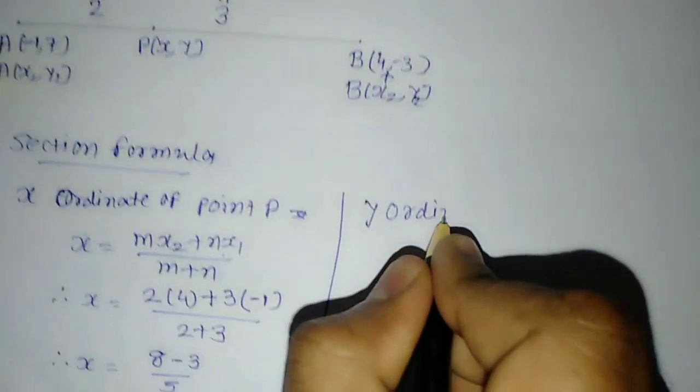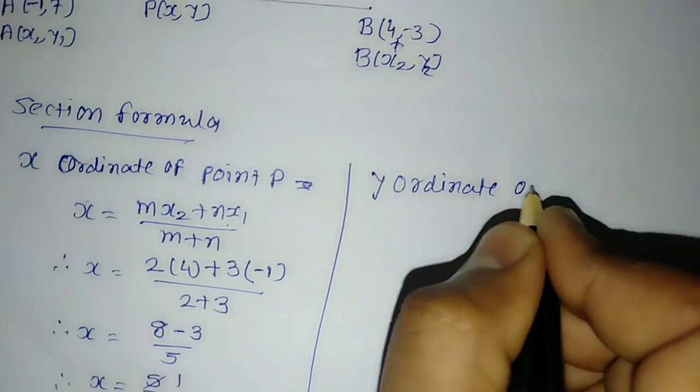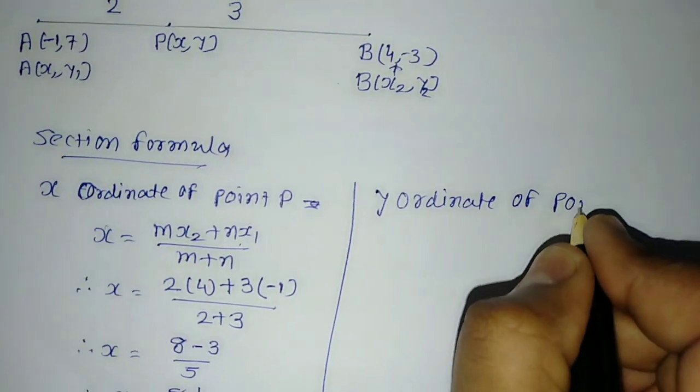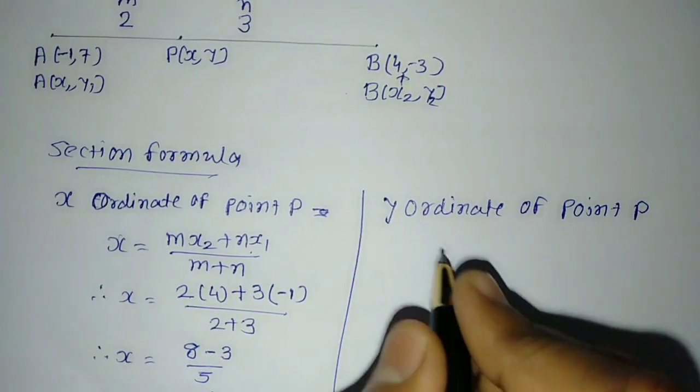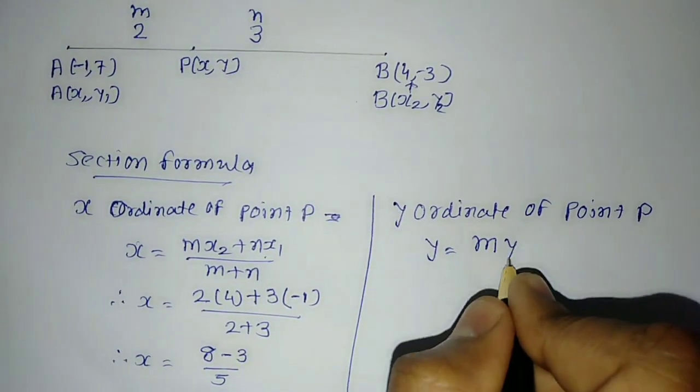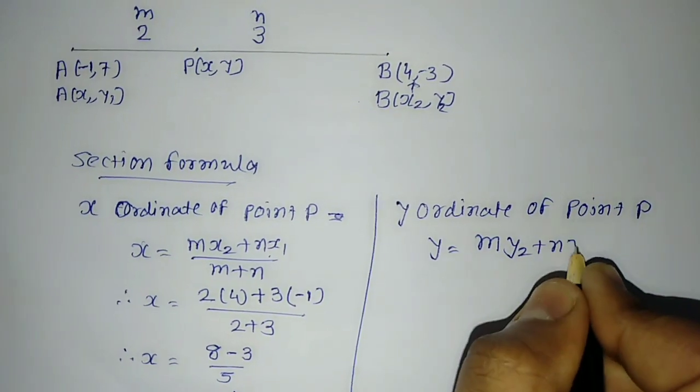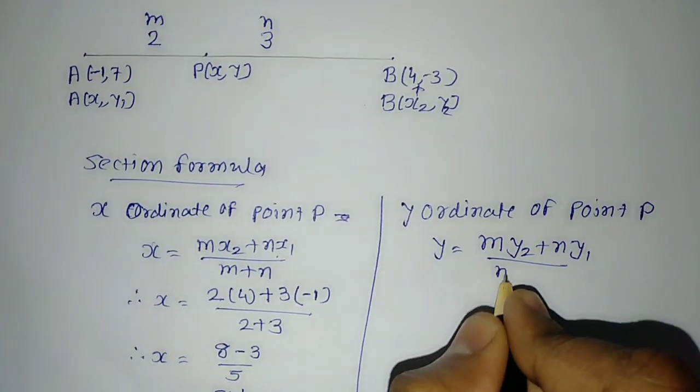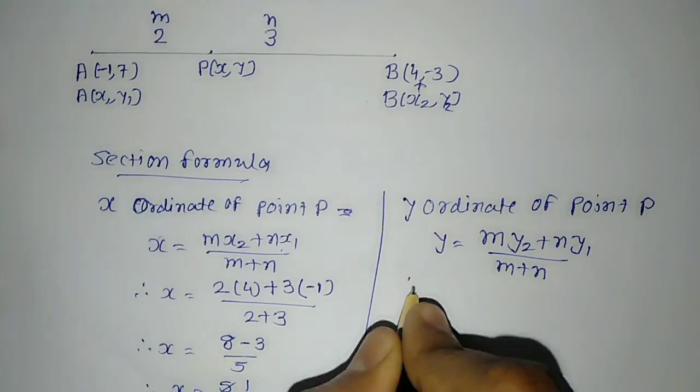Similarly, Y coordinate of point P: Y = (MY2 + NY1)/(M + N), as per the formula.